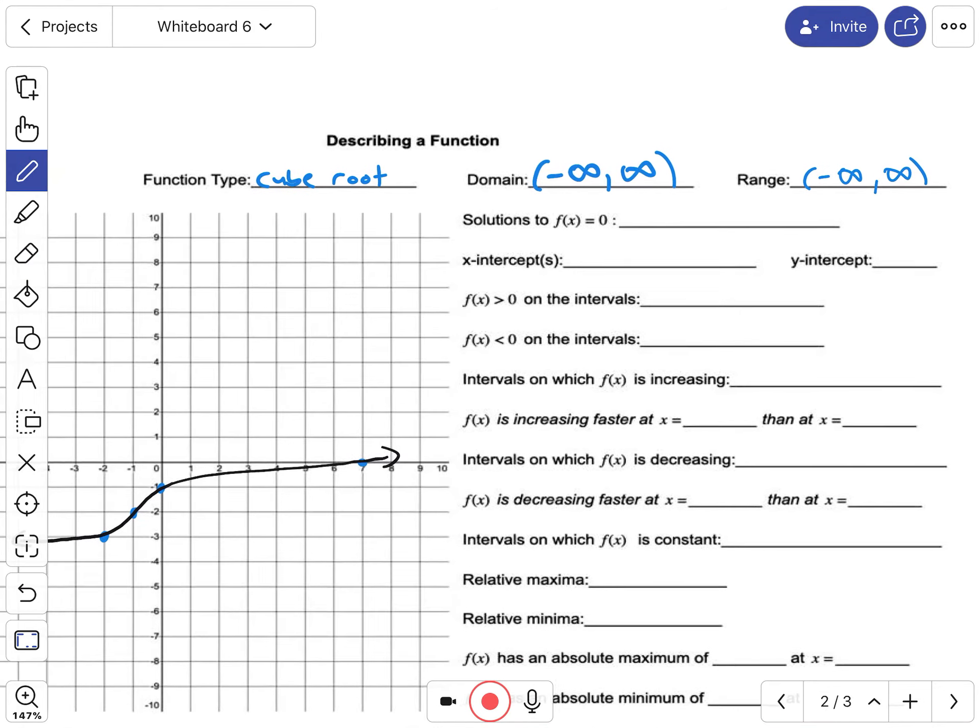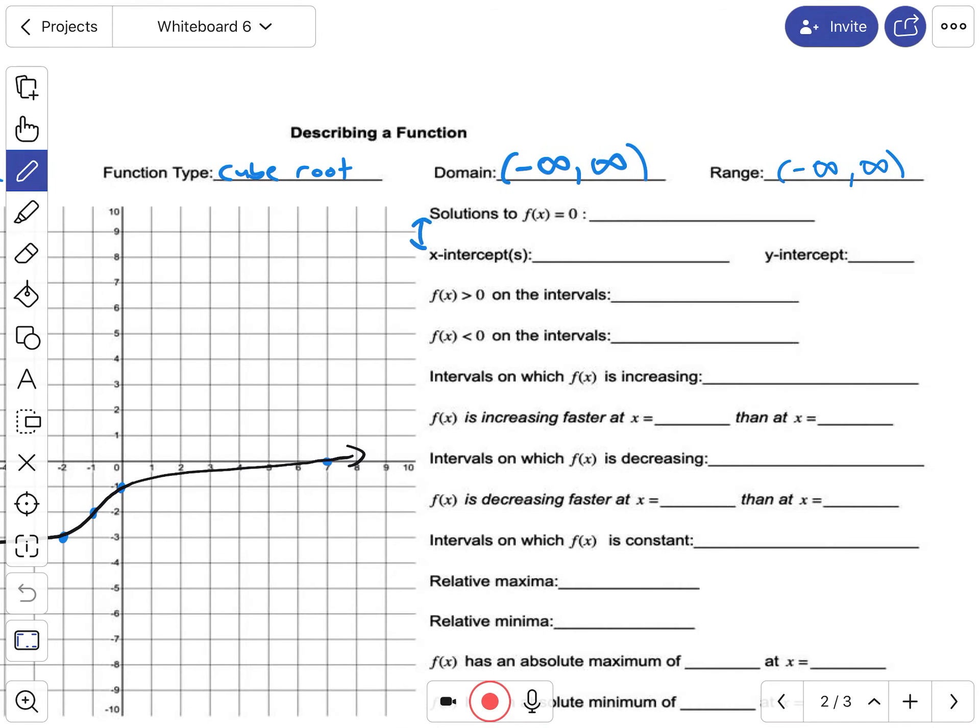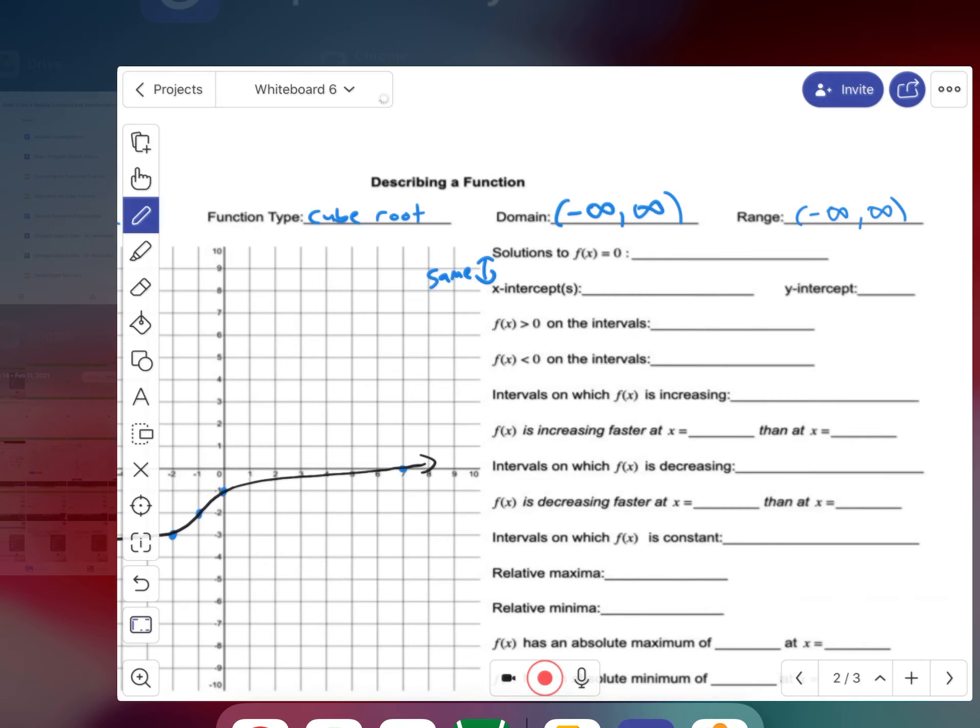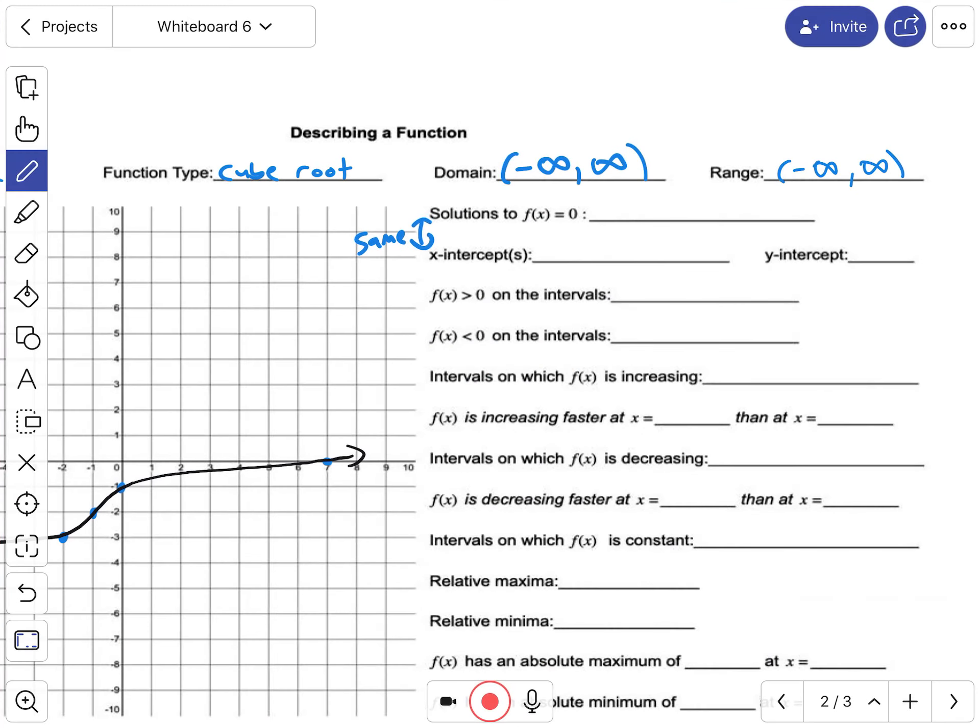Okay, solution and x-intercept. Well, remember these are the same. The x-intercept was this one here, (7, 0). Since the x-axis goes across horizontally, this is where the graph crosses that horizontal axis. And solutions? Well, you just write the same thing: it's just x = 7.